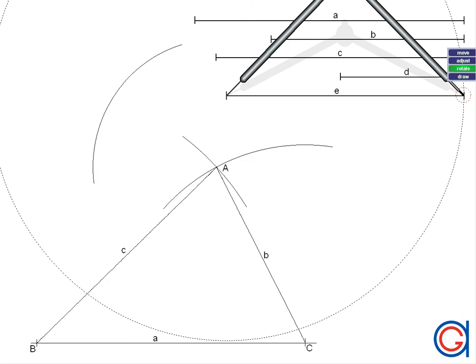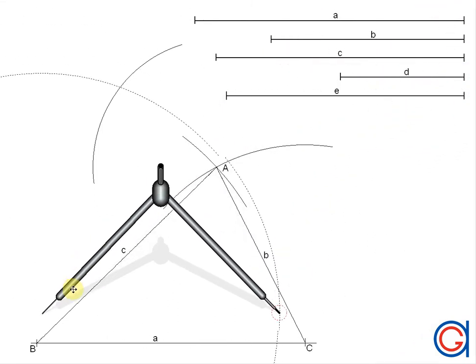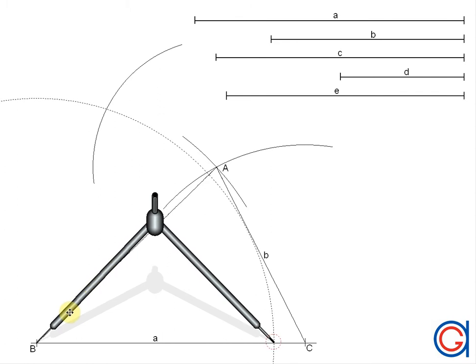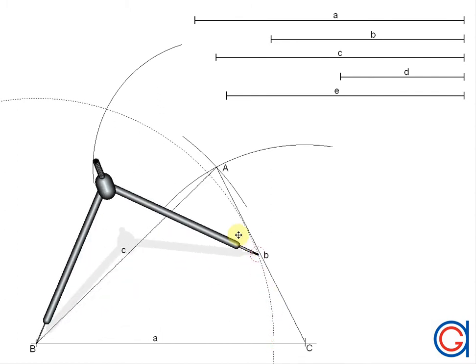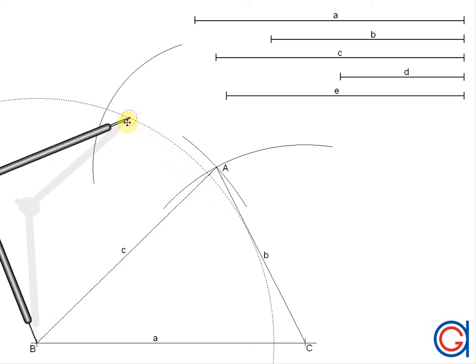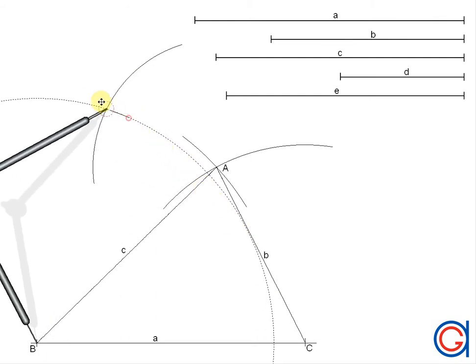And to draw the last arc we set our compass to the length of side E and setting our compass on vertex B we scribe an arc to the left to cut our previously drawn arc. Where these arcs cut we obtain our last vertex D of our irregular quadrilateral.